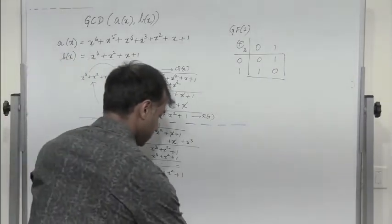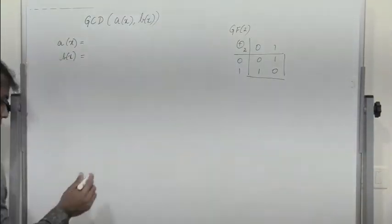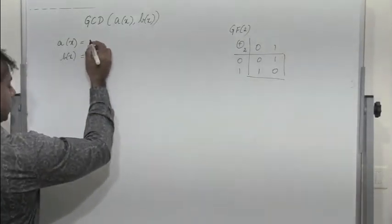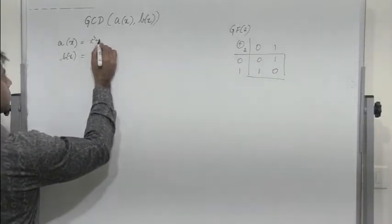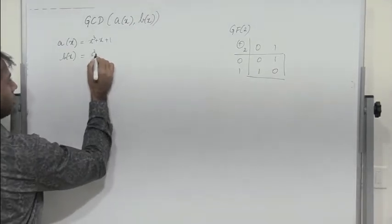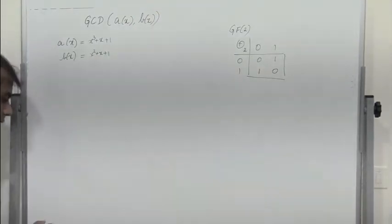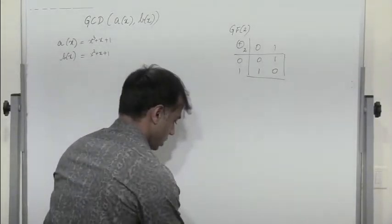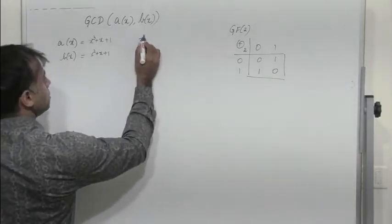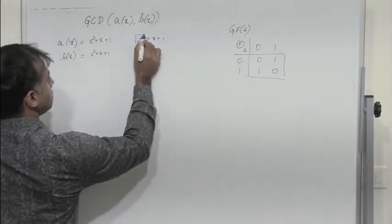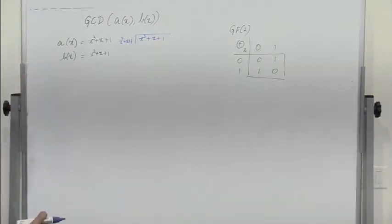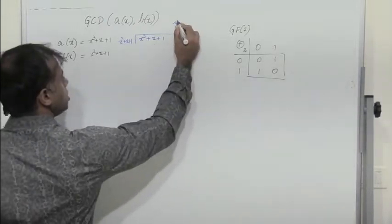Let us take another example. Find the GCD of A of x and B of x, where A of x is x³ + x + 1 and B of x is x² + x + 1. This is computed over GF(2).